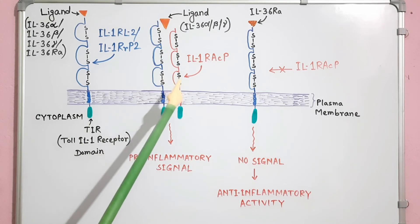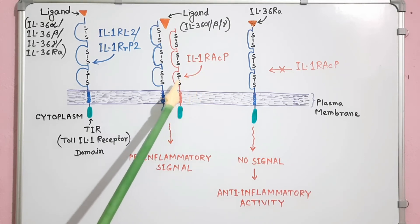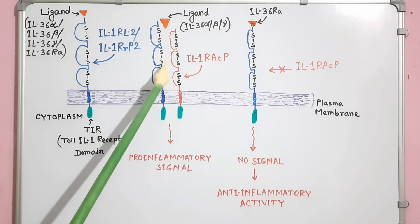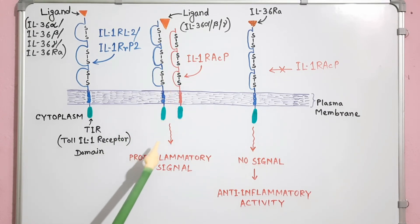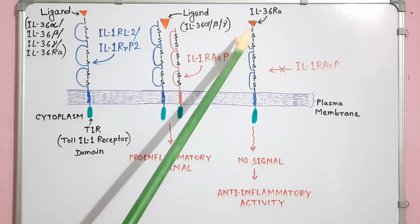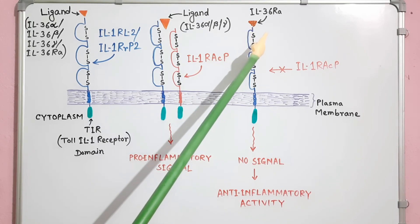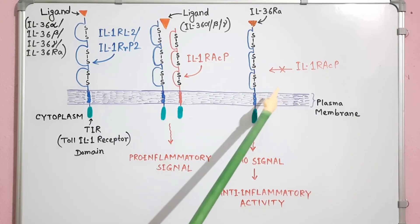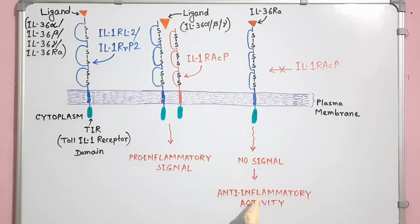For successful signal transduction, recruitment of the co-receptor IL1RACP is required. In this heterodimer condition, IL-36 alpha, IL-36 beta, and IL-36 gamma show their pro-inflammatory activity after binding to this receptor. However, if IL-36 receptor antagonist (IL-36RA) binds with IL1RRP2, no signal transduction occurs, as IL1RRP2 is unable to combine with IL1RACP, and IL-36RA shows its anti-inflammatory activity.